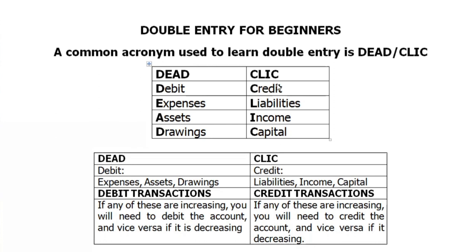DEAD stands for: D — Drawings, E — Expenses, A — Assets, D — Drawings. So expenses, assets, and drawings are debit items. For CLIC: C stands for Credit, L is Liabilities, I is Incomes, and C is Capital. That is DEAD CLIC.